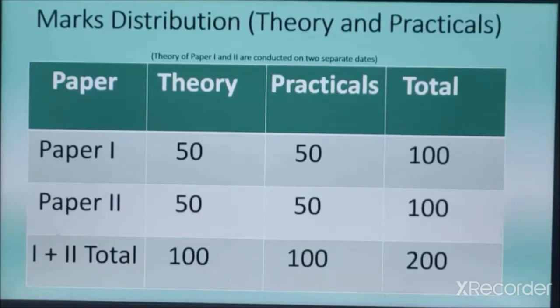Paper first consists of 50 marks theory and 50 marks practical. The total marks is 100 for paper first. Paper second has the same pattern: theory 50 marks and 50 marks practical, total 100 marks. Understood?